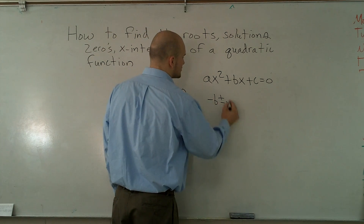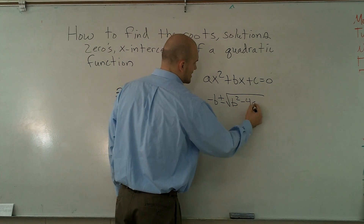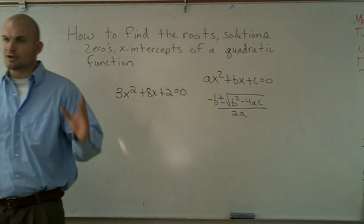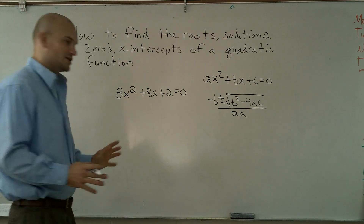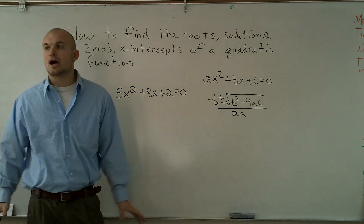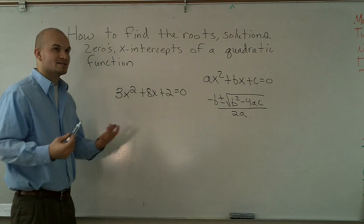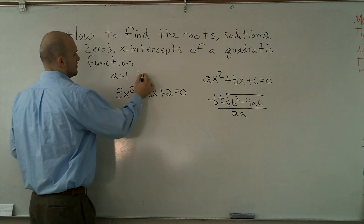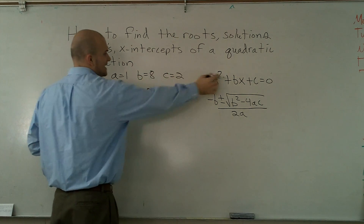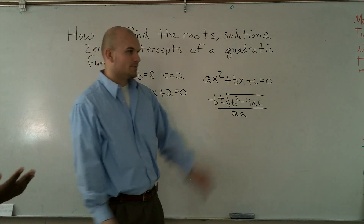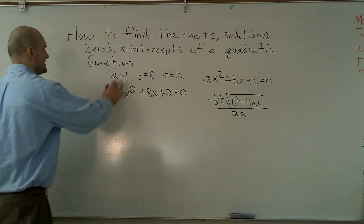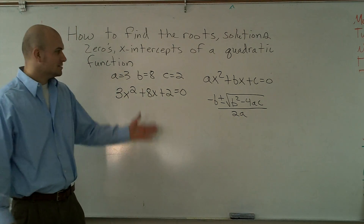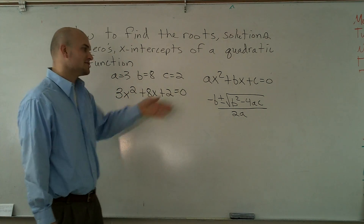The quadratic formula is: opposite of b, plus or minus the square root of b squared minus 4 times a times c, all over 2a. From the beginning of when we were doing quadratic equations and functions, I've always told you the first thing I want you to do is label what your a, b, and c are. So over here, a is not equal to 1 — a equals 3, b equals 8, and c equals 2. I'm going to evaluate by substituting a equals 3, b equals 8, c equals 2 into this formula.